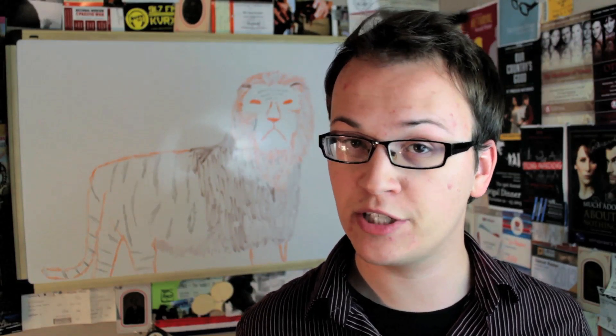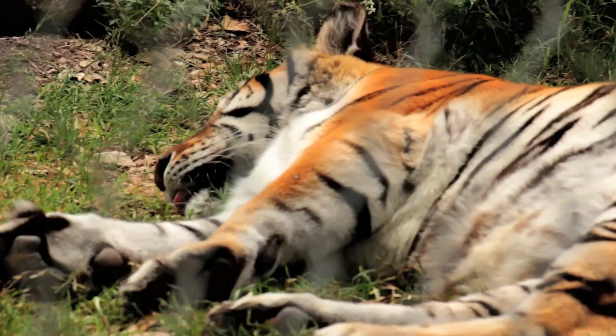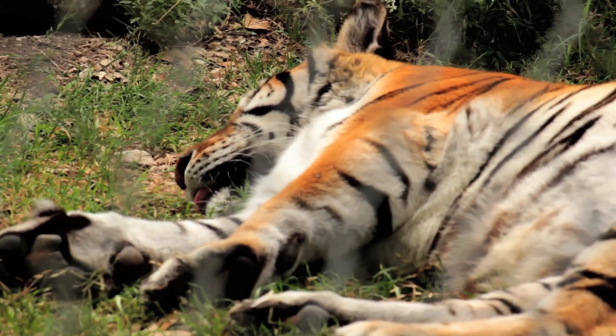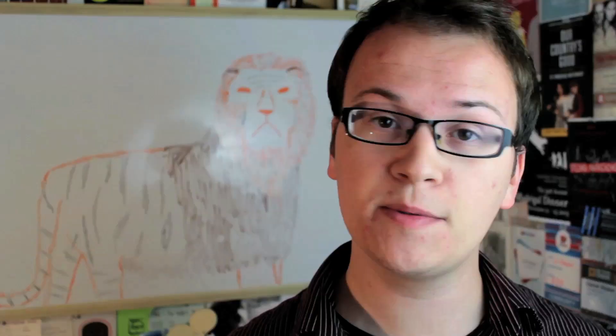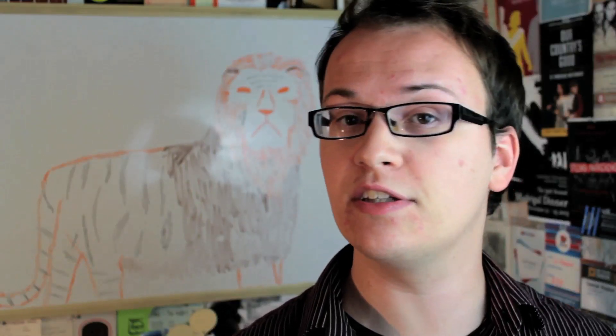Subspecies help biologists distinguish between isolated populations that may look a little different but are still part of the same species — as was the case with these two subspecies of tiger which, because they are the same species, could mate and produce this tiger here. So subspecies are used to delineate differences within a species.